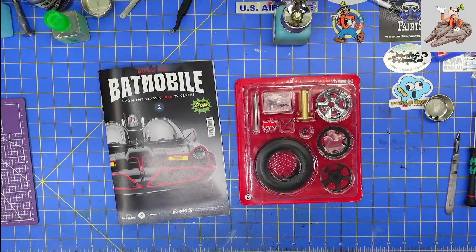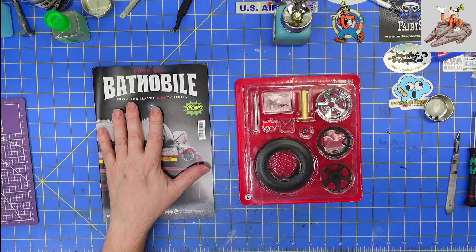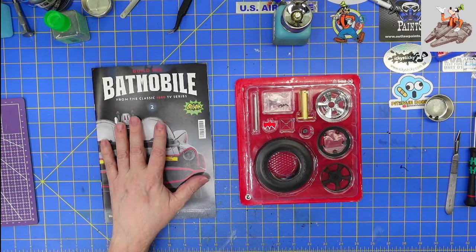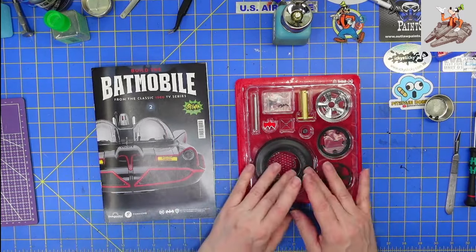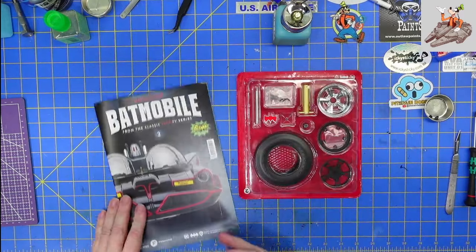Hello and welcome to Buckman's Model Mania. Today we're going to be working on the second pack from the Fanhome Batmobile. And this pack, most of it is going to be the first of the four tires.